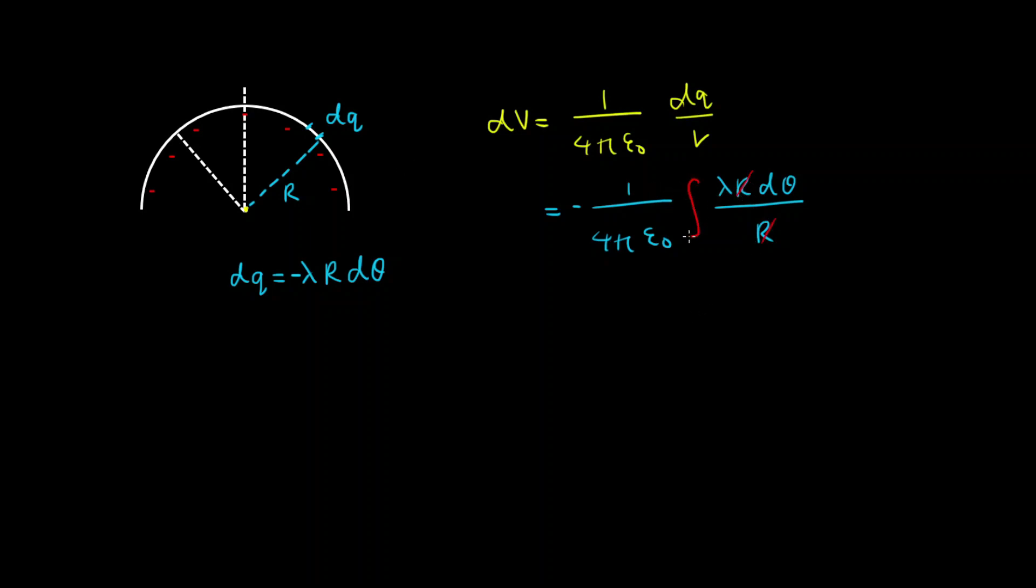And then integrating both sides of this equation we get the total potential due to the differential charges summed up all along that semi-circular arc. So taking lambda outside the integral and integrating from 0 to pi which is 180 degrees.